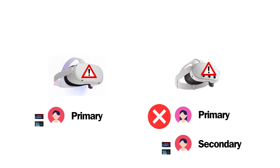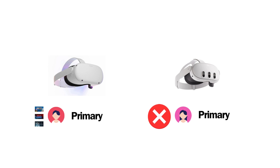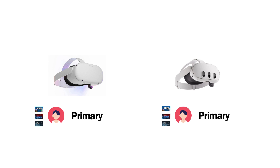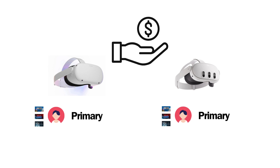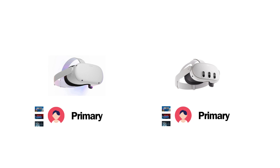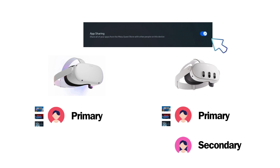In order to properly set up app sharing for them, John actually has to set up Trisha's Quest 3 as his own so he's the primary user on it. This can cause issues with receiving a referral bonus, so make sure to watch the video all the way through if that's a concern. Once the Quest 3 has been set up with John as the primary user, he needs to add Trisha as a secondary user. The last step is John needs to enable app sharing on the Quest 3 via the user menu.